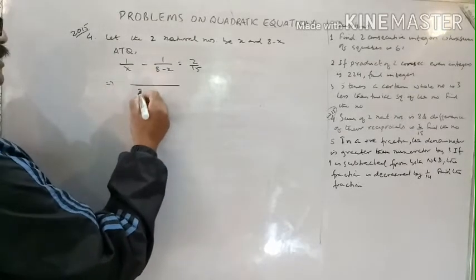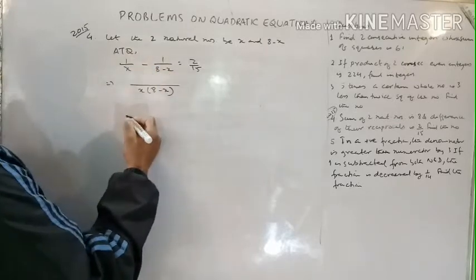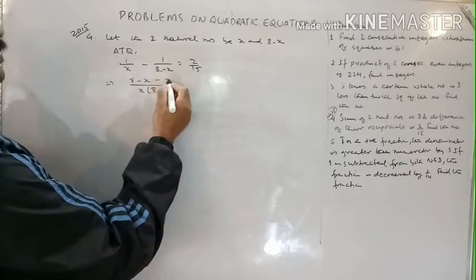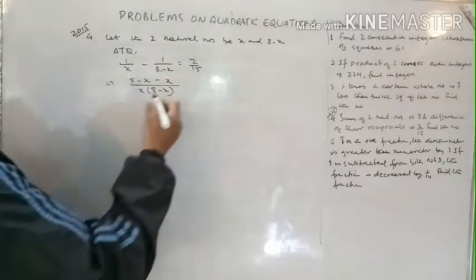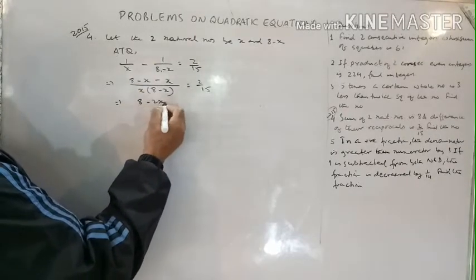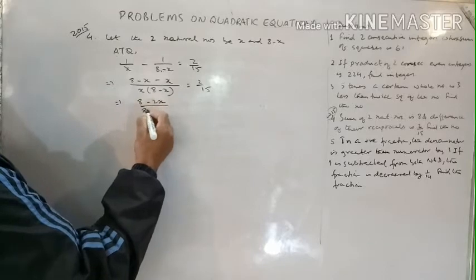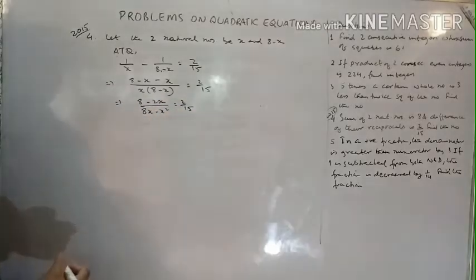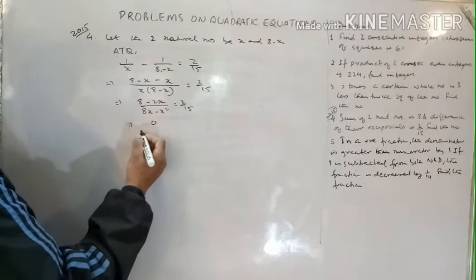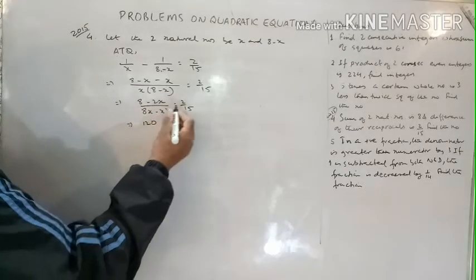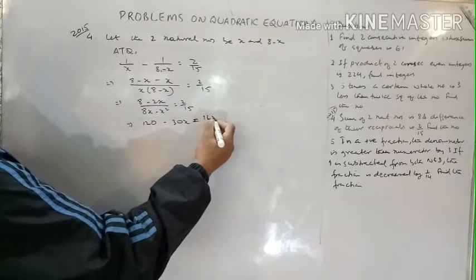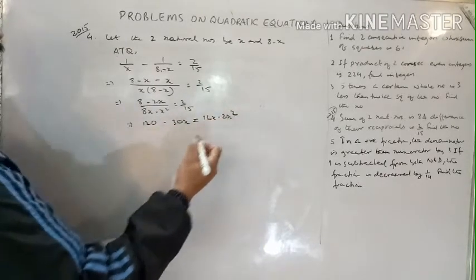Taking LCM: (8 minus x minus x) divided by x(8 minus x) equals 2/15, which simplifies to (8 minus 2x) divided by (8x minus x squared) equals 2/15. Cross multiplying: 15(8 minus 2x) equals 2(8x minus x squared), giving 120 minus 30x equals 16x minus 2x squared.